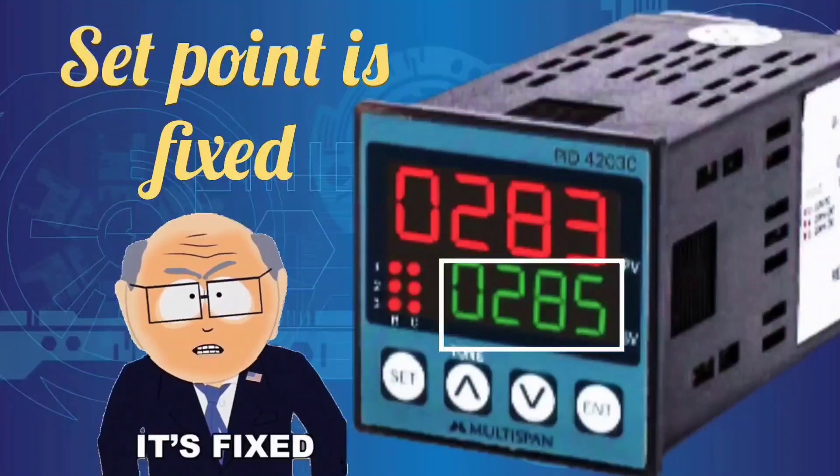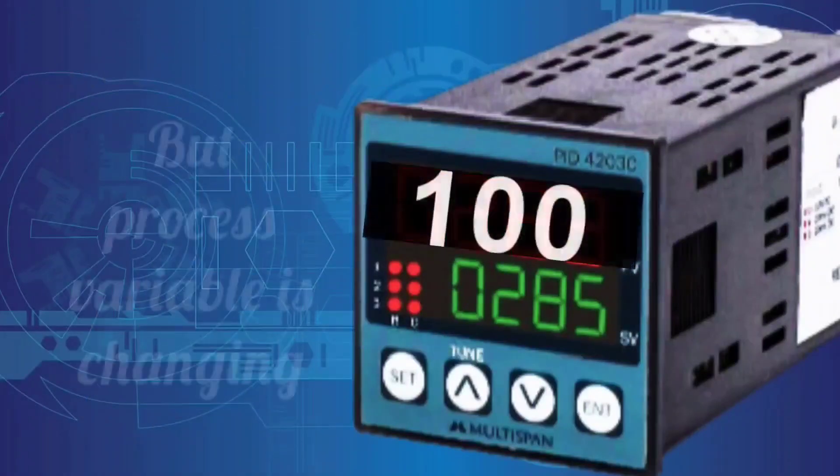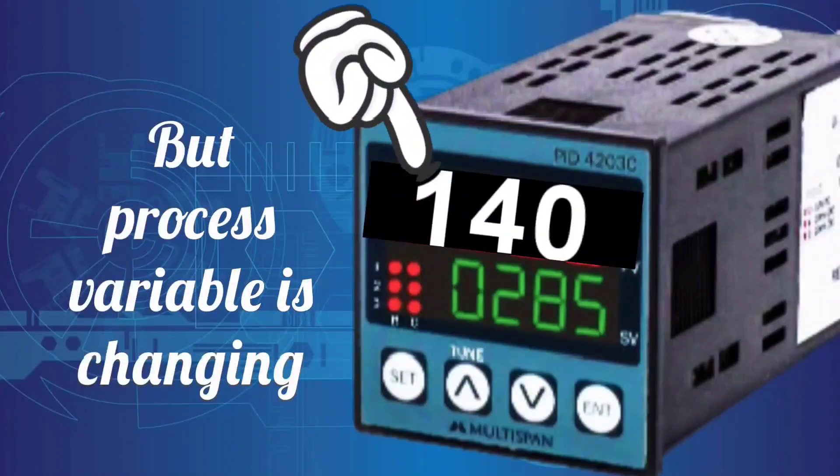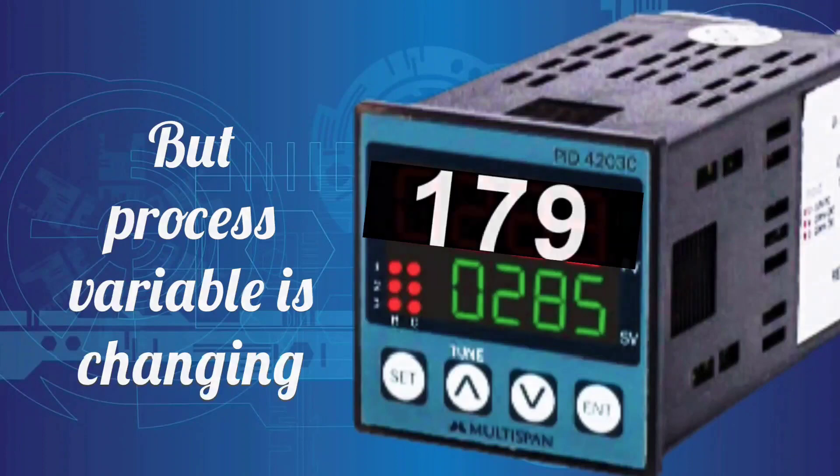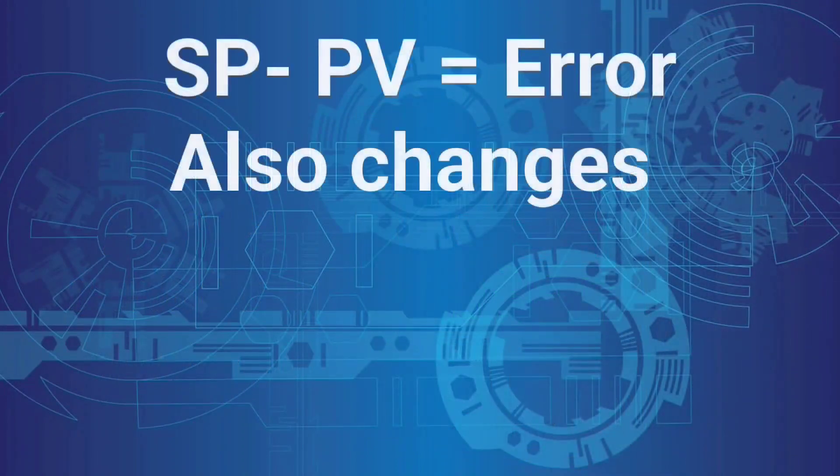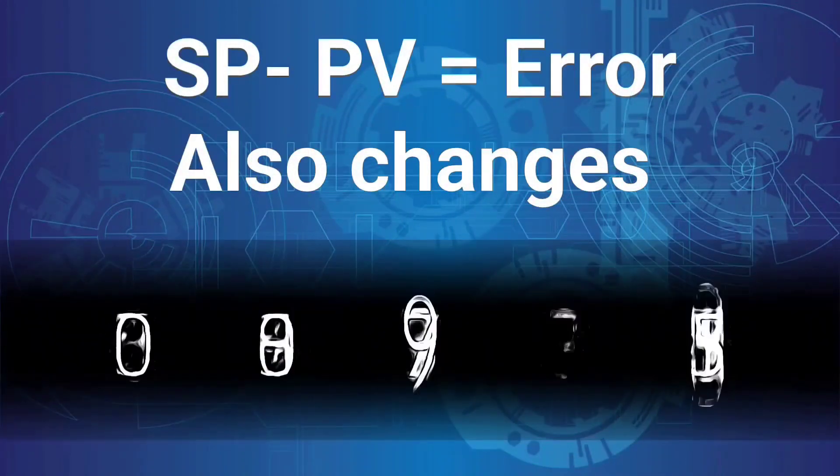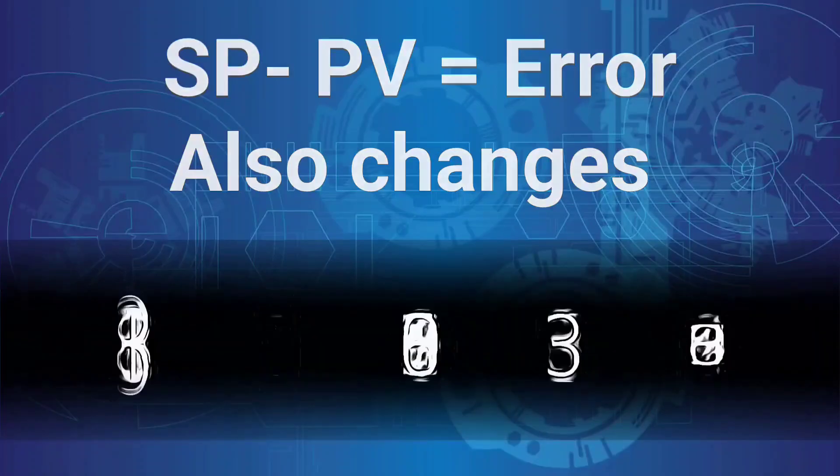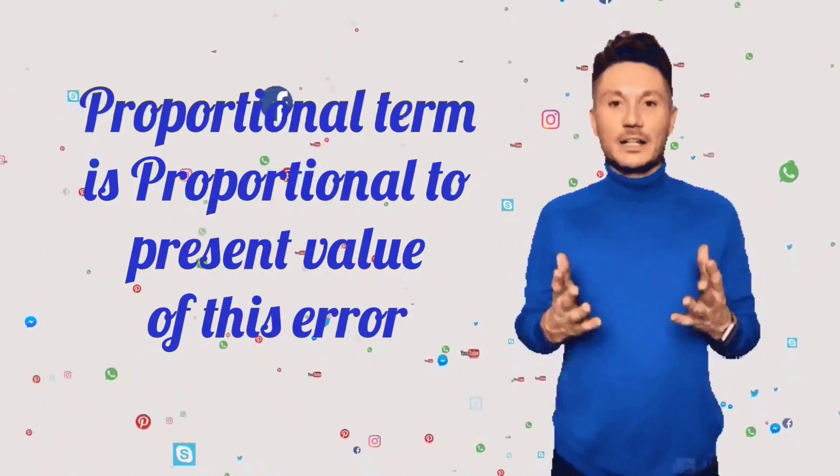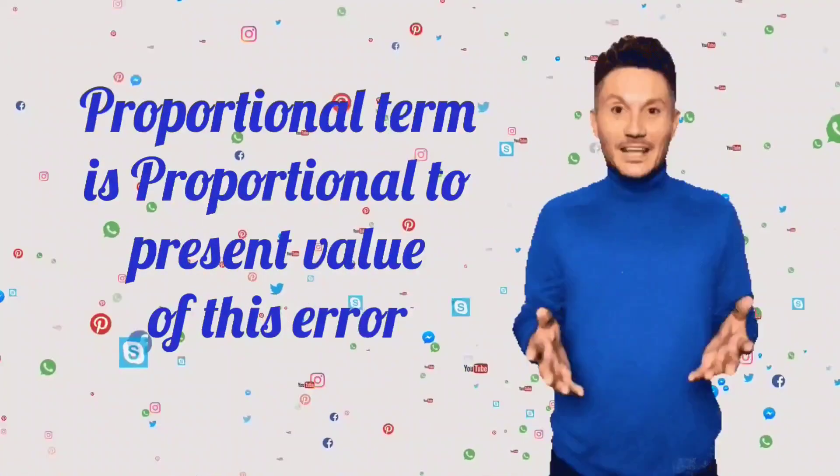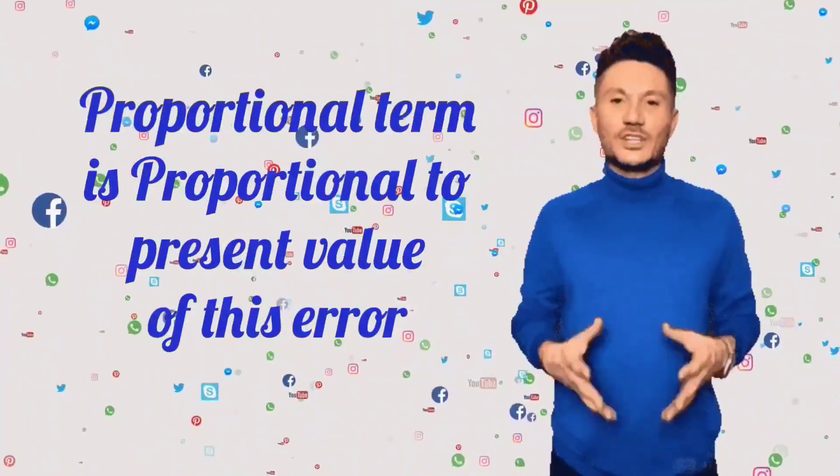The set point is fixed, but the process value, or process variable, keeps on changing. So the difference, means error between them, also keeps on changing. The proportional term of PID controller is proportional to the present value of this error.